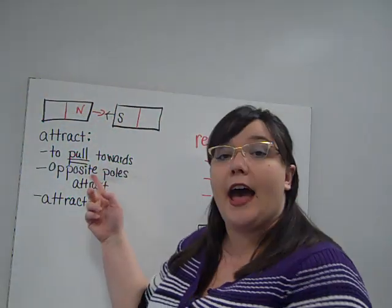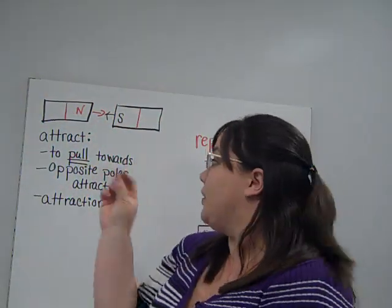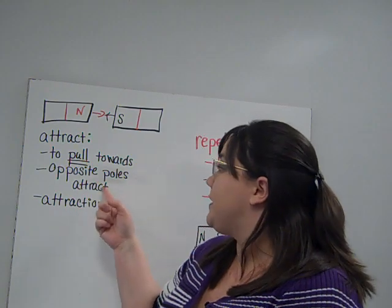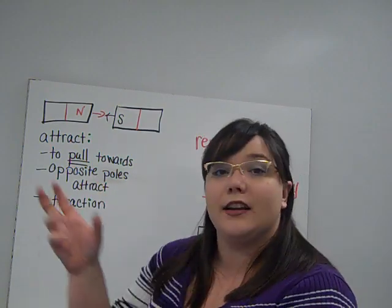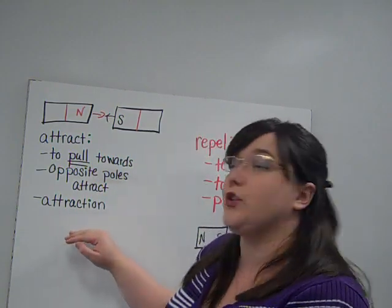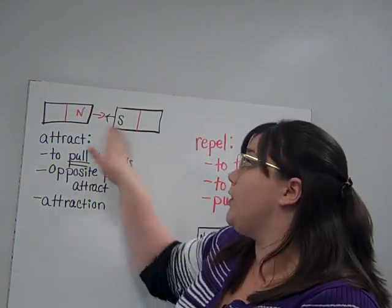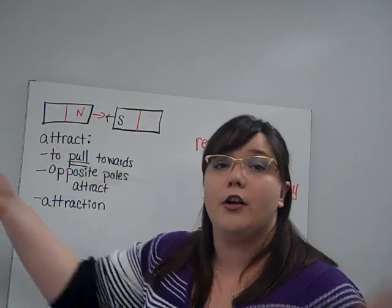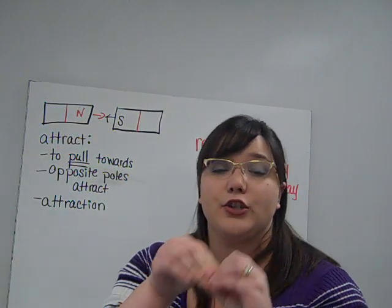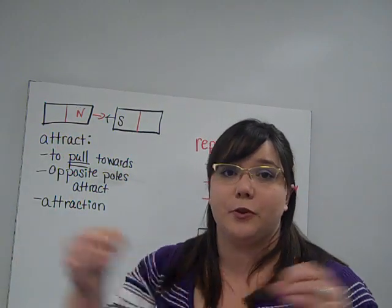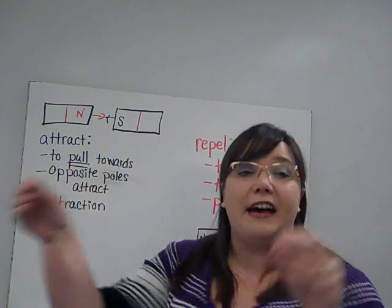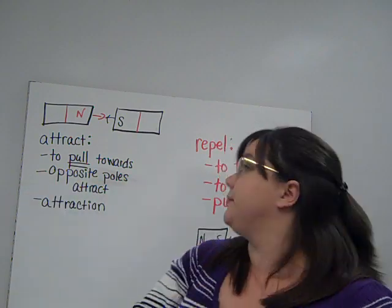We know that attract means to pull together, and the opposite poles of a magnet attract. We call this attraction. So we have a north and a south pole — they pull together. We say that they're attracting, or they're being attracted, or they have attraction.